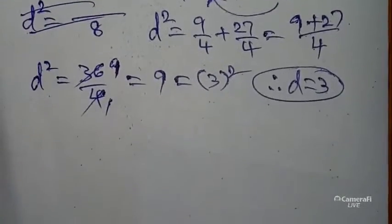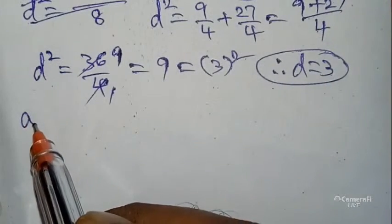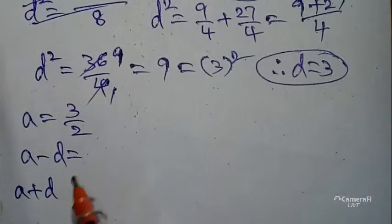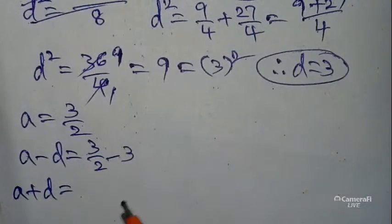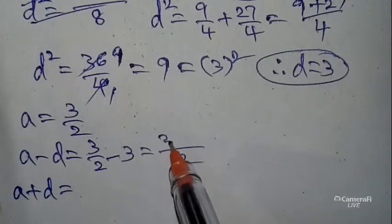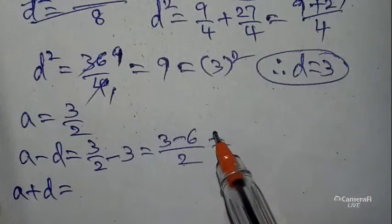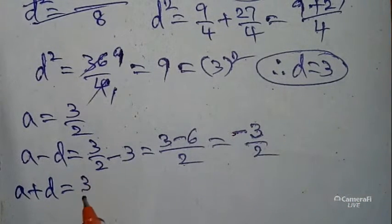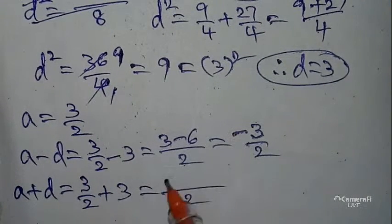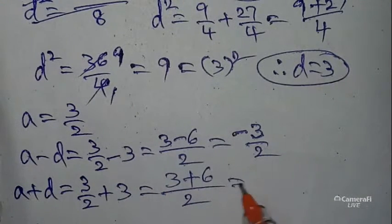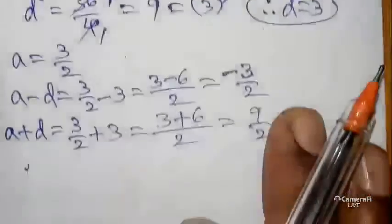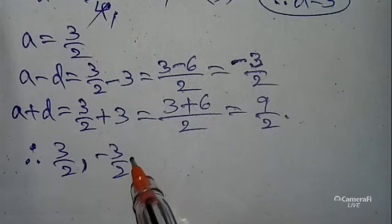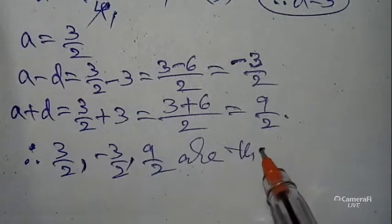After getting a and d values, my dear students, a = 3/2 and d = 3. Now find a-d and a+d. a-d = 3/2 - 3 = (3-6)/2 = -3/2. And a+d = 3/2 + 3 = (3+6)/2 = 9/2. Therefore, we got all values: 3/2, -3/2, and 9/2 are all the roots.